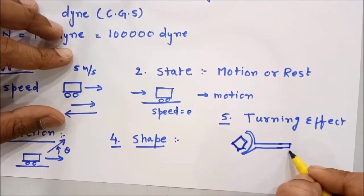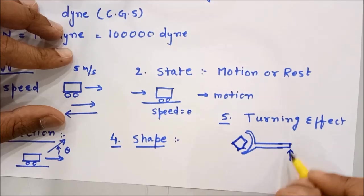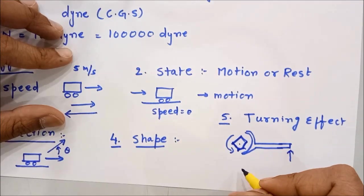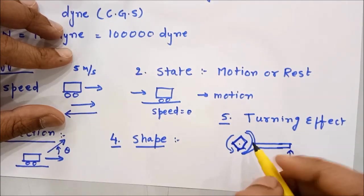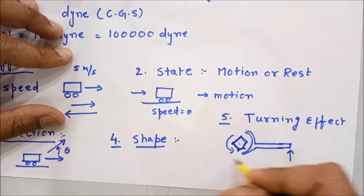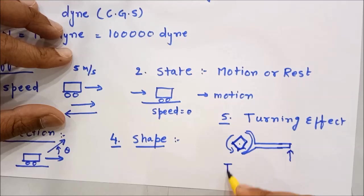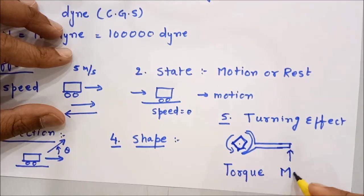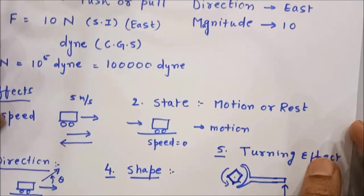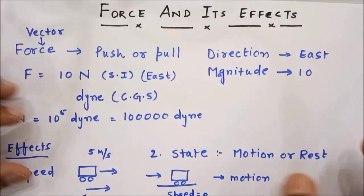Now when you exert the force in this direction like this in the upper direction, you will see that this bolt starts turning. So when you exert a force, that force gives you the turning effect. This turning effect of the force is called torque. It is also called moment of force.